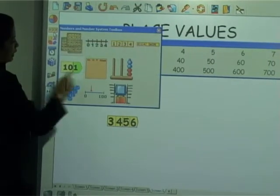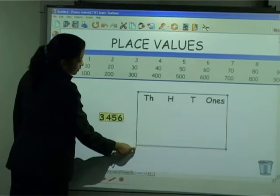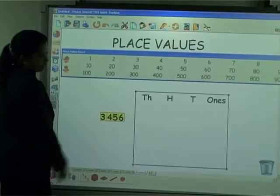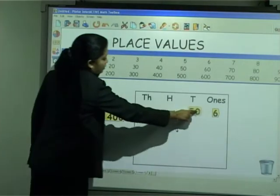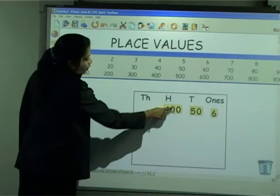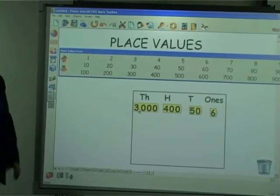Now, if I want to put them in the place value chart, all I need to do is bring out the 6 to the ones, 50 to the tens, 400 to the hundreds value placing, and 3000 to the thousands placing.